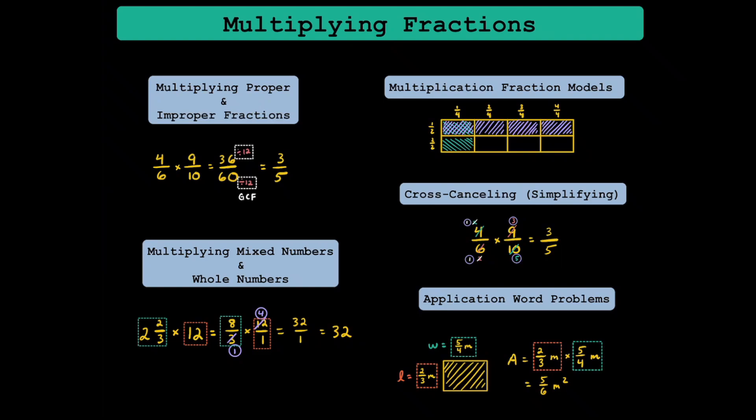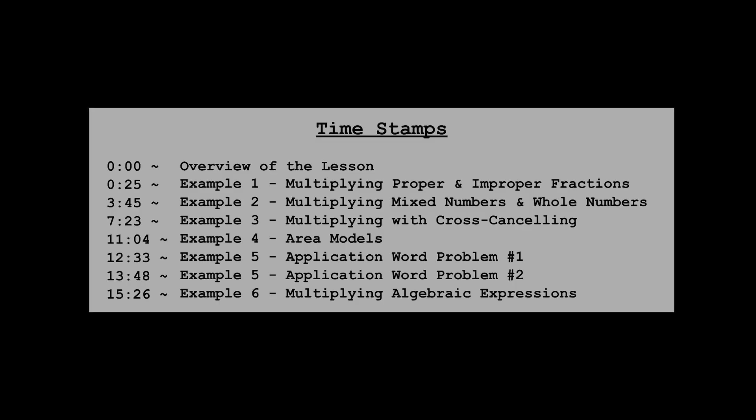Hey everyone, welcome to a video on multiplying fractions. Throughout this video, I'll be doing some different examples where I'm multiplying improper fractions, proper fractions, whole numbers, and mixed numbers. Once you get the hang of it, I'll be going over how to cross-cancel or simplify before multiplying, and then go into showing you some models as well. Towards the end, I'll go over some application word problems and some extension problems as well. Let's get into it.